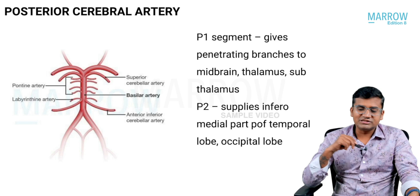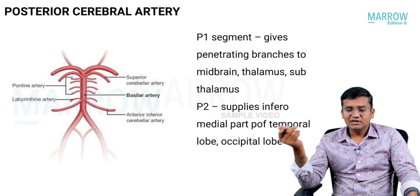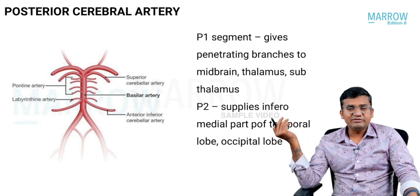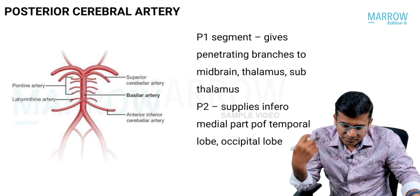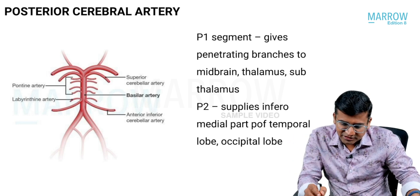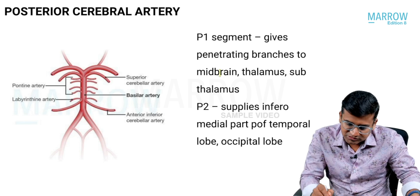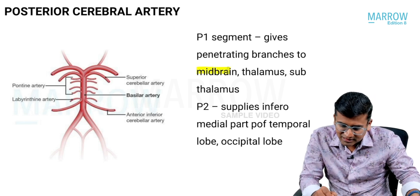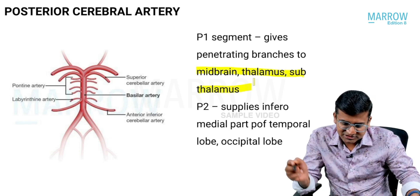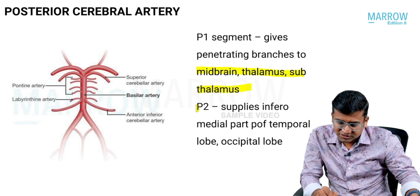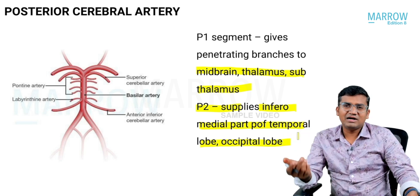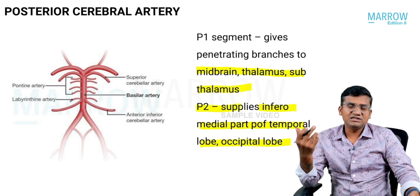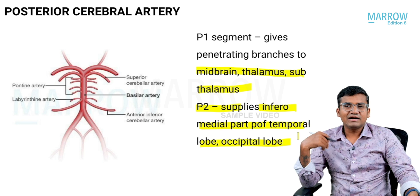Now the posterior cerebral artery. It is divided into two segments: P1 and P2. The P1 segment of the posterior cerebral artery gives branches to the midbrain, thalamus, and subthalamus. The P2 segment supplies the inferomedial part of the temporal lobe and the occipital lobe. So the posterior cerebral artery is the main artery supplying the visual cortex, midbrain, and thalamus.